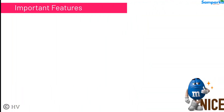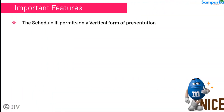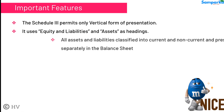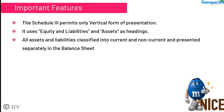Schedule 3 permits only vertical form of presentation. It uses equity and liabilities and assets as headings. All assets and liabilities are classified into current and non-current and presented separately in the balance sheet.